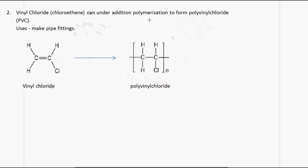The second example we are going to look at is PVC. The monomer is vinyl chloride, which is represented by this molecule here. This molecule can undergo an addition polymerization reaction, in which case the double bond disappears and it becomes a single bond, but you still have the same atoms present.